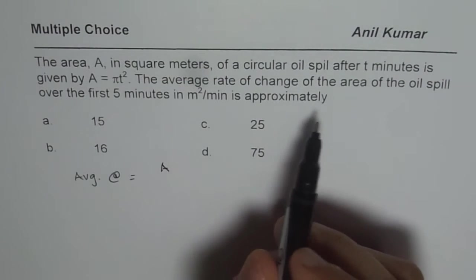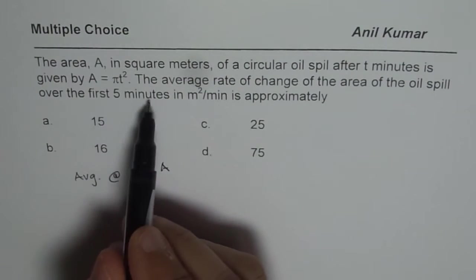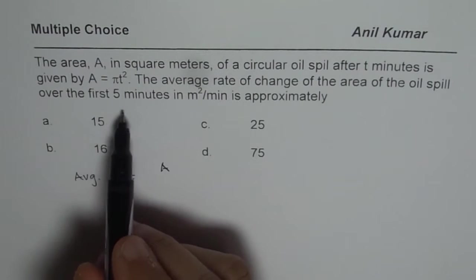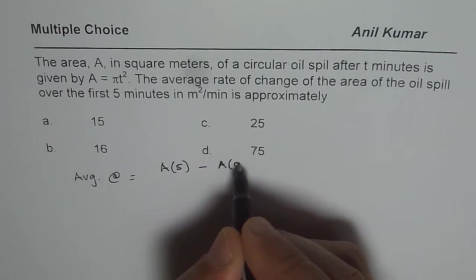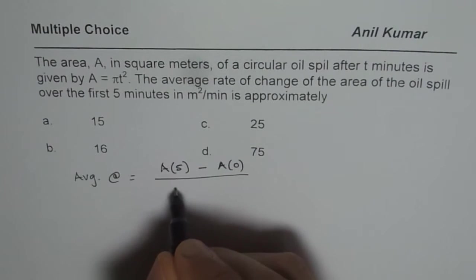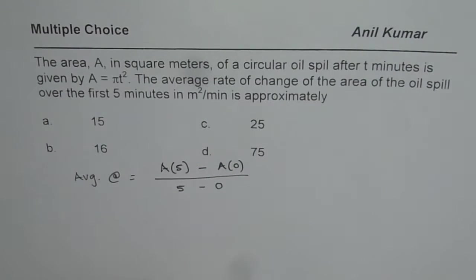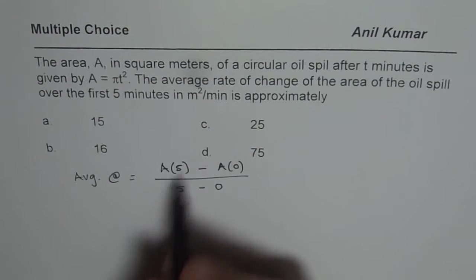We are talking about the first 5 minutes. First 5 minutes means from 0 to 5. So, area after 5 minutes minus area when we started over 5 minus 0. You have to substitute 5 in T and 0 in T to find this answer.